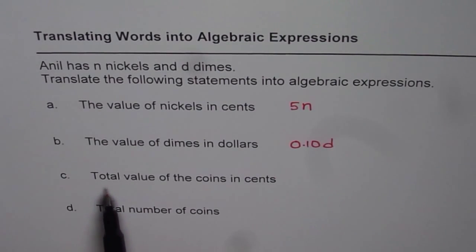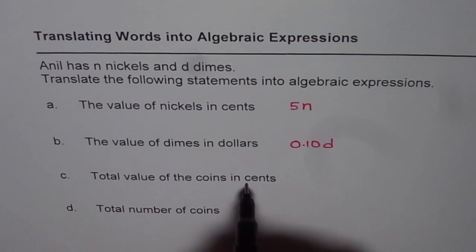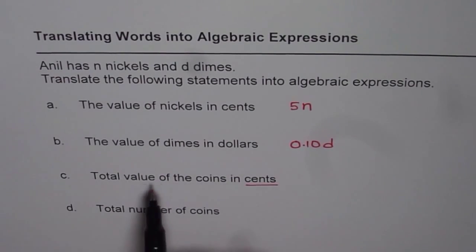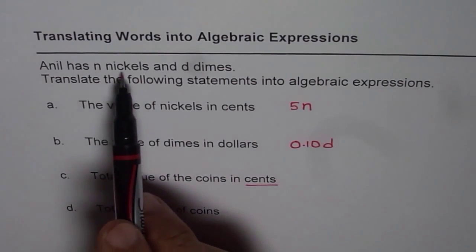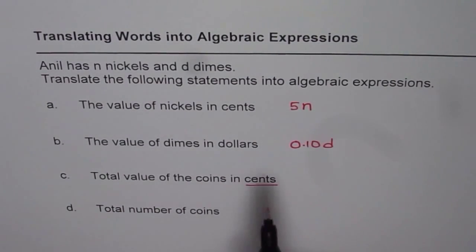Then we have total value of the coins in cents. Remember, units are very important. We have total value of coins. How many coins do we have? We have n nickels and d dimes.